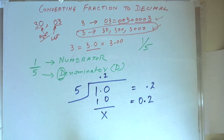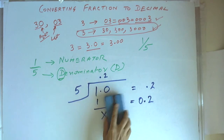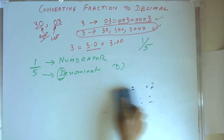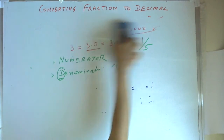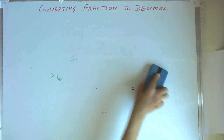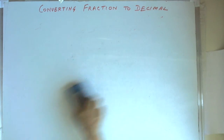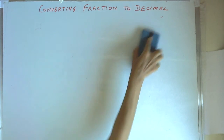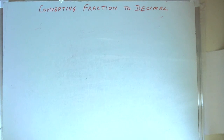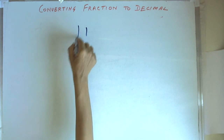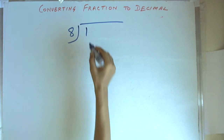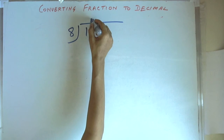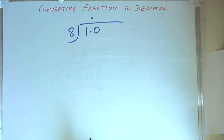Similarly, if we have to calculate, say 1 by 8 — let us take another example. If we convert 1 by 8, which is a fraction, into decimal, we follow the same method and divide 1 by 8. Again, 1 cannot be divided by 8, so we put a decimal point and a 0.